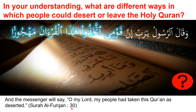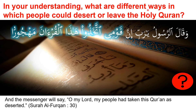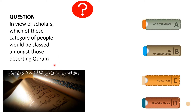In Surah Al-Furqan verse 30, Allah describes: 'Wa qala rasulu ya rabbi inna qawmi ittakhadhu hadhal Qurana mahjura — And the messenger will say: O my Lord, my people had taken this Quran as deserted.' The messenger's job was to deliver us the message of our Creator, and Prophet Muhammad did it very well. As stated: 'Al-yawma akmaltu lakum dinakum — Today I have perfected your religion.' The question is: in your understanding, what are the different ways in which people could desert or leave the Holy Quran?